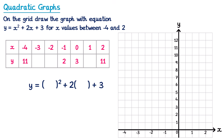Now let's move along to when x is equal to negative 3. We do this in exactly the same way — put negative 3 inside the brackets. So y equals negative 3 squared which is positive 9, two lots of negative 3 is negative 6, and then plus 3. Nine take away 6 is 3, and adding 3 gives 6. So when x is negative 3, y is 6.